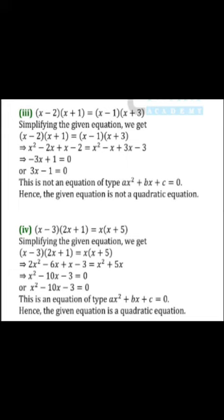Again, third part: (x - 2)(x + 1) = (x - 1)(x + 3). Simplifying we get x² - x - 2 = x² + 2x - 3. This is not an equation of type ax² + bx + c. Here, x² terms cancel. So, this is not a quadratic equation.